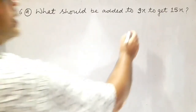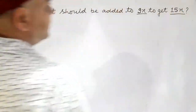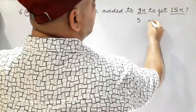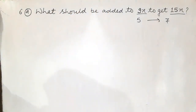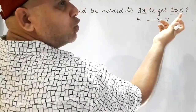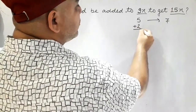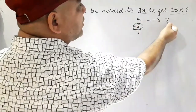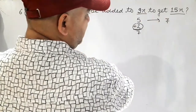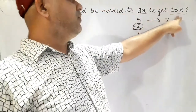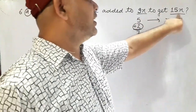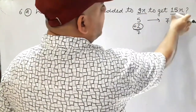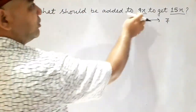What should be added to 9x to get 15x? Suppose the question asked: what should be added to 5 to get 7? You would subtract 7 minus 5 to get 2, so 2 should be added to 5. Similarly, to find what should be added to 9x to get 15x, we subtract: 15x minus 9x equals 6x. Therefore 6x should be added to 9x to get 15x.